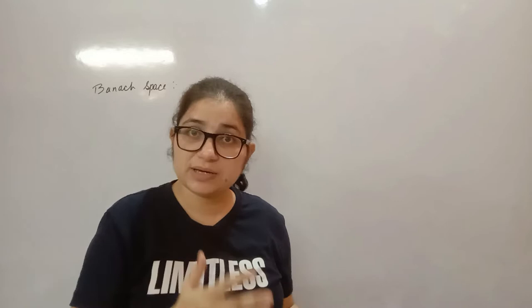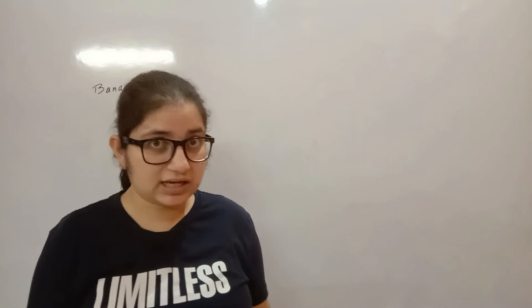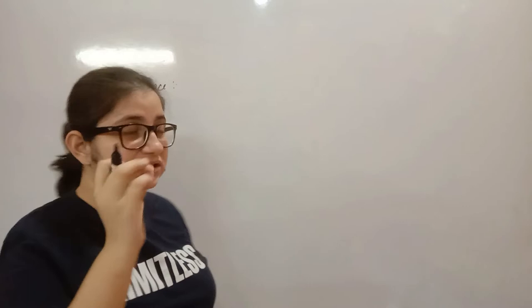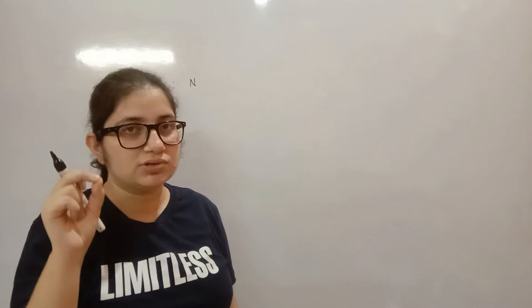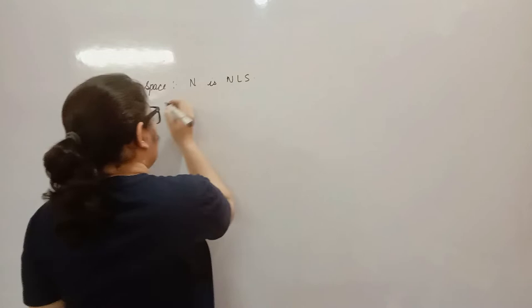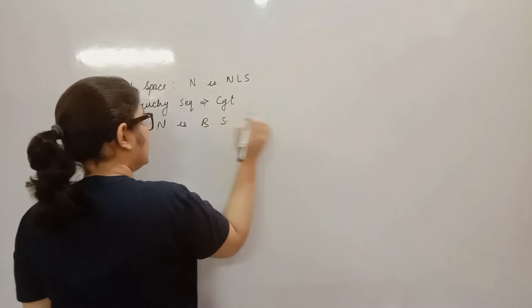So there will be some subspaces in any space. Some spaces will be Banach and some will not. All these are normed linear spaces. We will show them as normed linear spaces, and we will show that it becomes a Banach space.